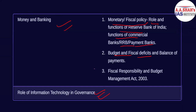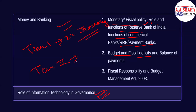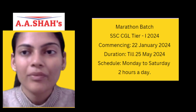The last topic is the role of information in governance. This will be covered in both batches. Our Tier 1 batch starts on January 22nd. The marathon batches for Tier 1 Economics and Tier 2 Economics start on the 25th.